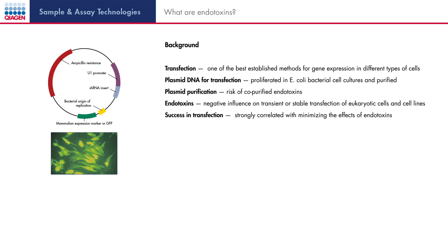Transfection of eukaryotic cells is one of the most important technologies in the study of gene expression in different tissues. Cells or cell lines of the tissue of interest are transfected with a certain gene or part of the gene. The DNA of interest is most commonly cloned in a vector and the resulting construct is proliferated in E. coli and then purified. The purified plasmid DNA can contain endotoxins from the bacterial cell which are co-purified, negatively influencing the transfection of eukaryotic cells and decreasing transfection efficiency.